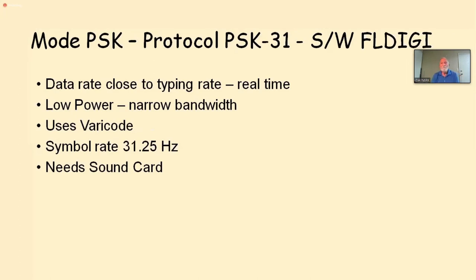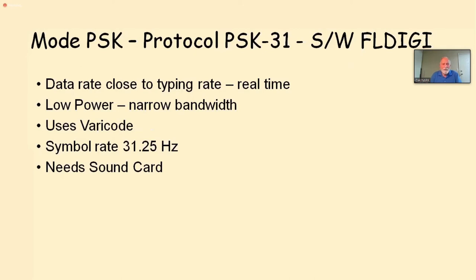PSK31: its mode is PSK, software is FL Digi, which we'll show in the lab. The data rate is 31 bits per second — so slow it's close to typing rate, allowing real-time keyboard-to-keyboard conversation as opposed to FT8's canned macros. It's low power with very narrow bandwidth. It uses Varicode, which is based on the same technology as Morse code — common characters like E get short codes (one dot), less common characters like Z get longer codes. It does need a sound card.